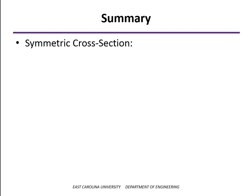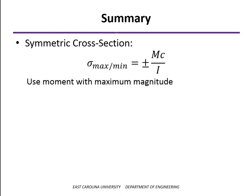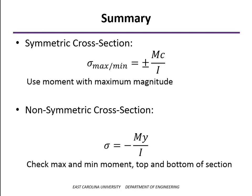In summary: when you have a symmetric cross-section, simply pick the moment with the maximum magnitude and use MC over I to calculate both the maximum tension and maximum compressive stress. When you have a non-symmetric cross-section, use the general formula sigma equals minus MY over I and check at the top and the bottom. If your moment diagram has both positive and negative bending, the safest method is to check both the maximum and minimum moment, and check at the top and bottom of the section to ensure you're capturing both the maximum tension and maximum compression within the beam.